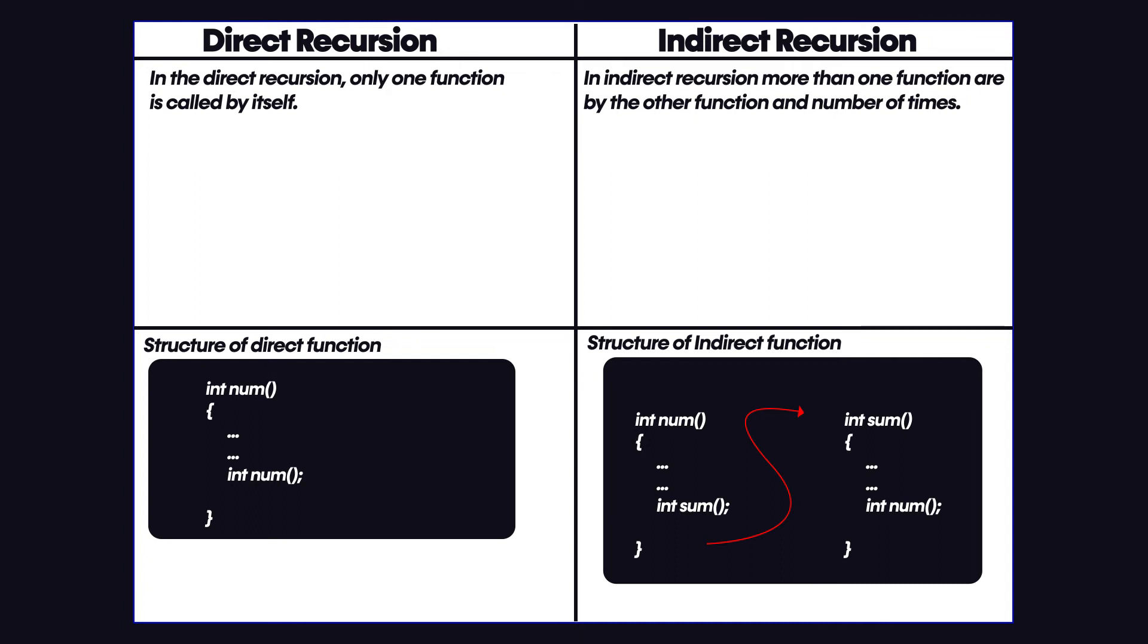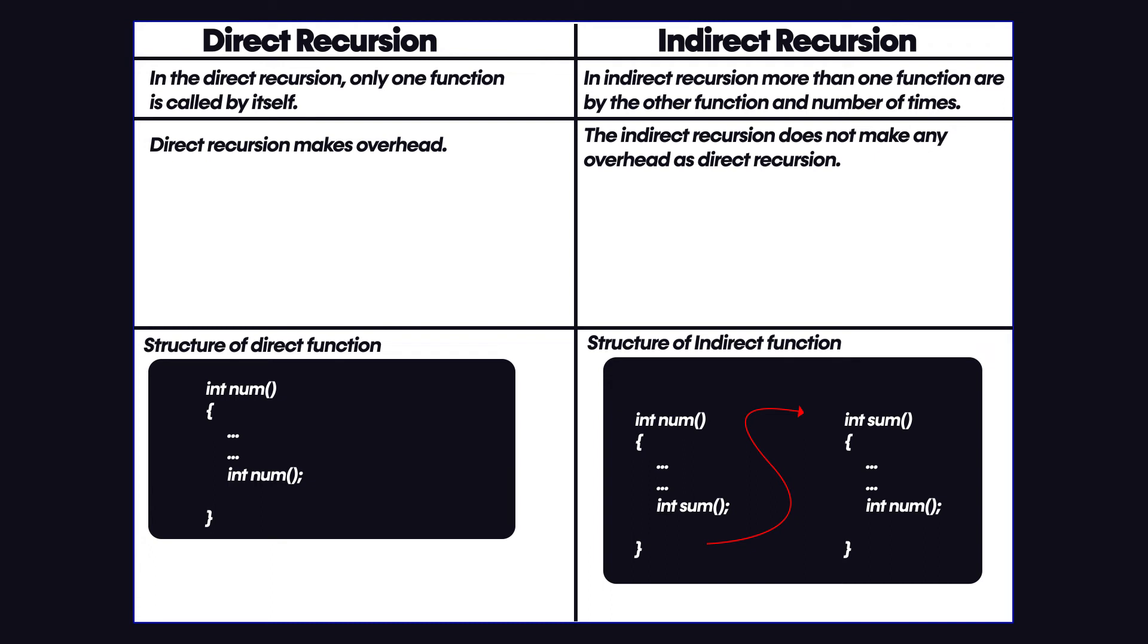Continuing with the differences, direct recursion makes an overhead, whereas the indirect recursion does not make any overhead as direct recursion. Now a key point is that the direct recursion is always called by the same function...